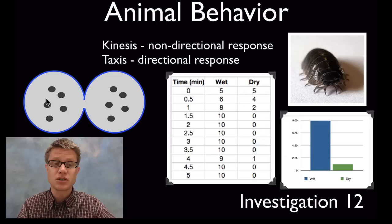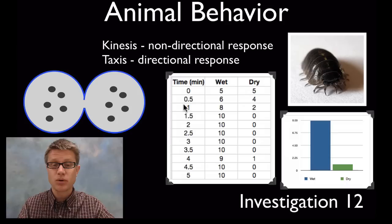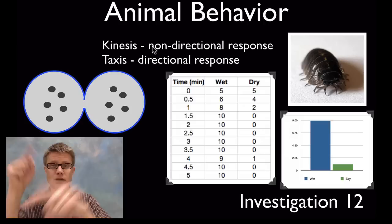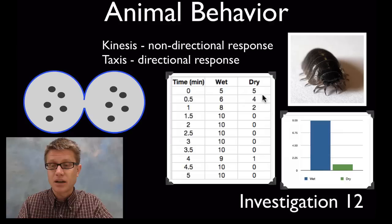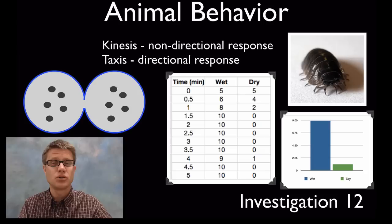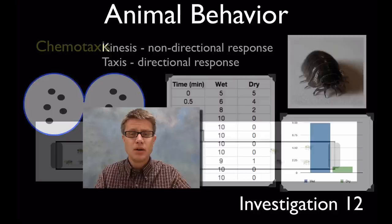Next is animal behavior using pill bugs. You put pill bugs on either side of a choice chamber. You put five on each side and allow them to move through the middle. You then put a treatment: wet on this side, dry on this side. Every half minute, record how many on each side. Pill bugs show kinesis: they randomly move when unhappy, and stop when happy. On average, nine pill bugs in the wet side, only one on the dry side. You can do chi squared analysis to figure out if they're really choosing the wet side.